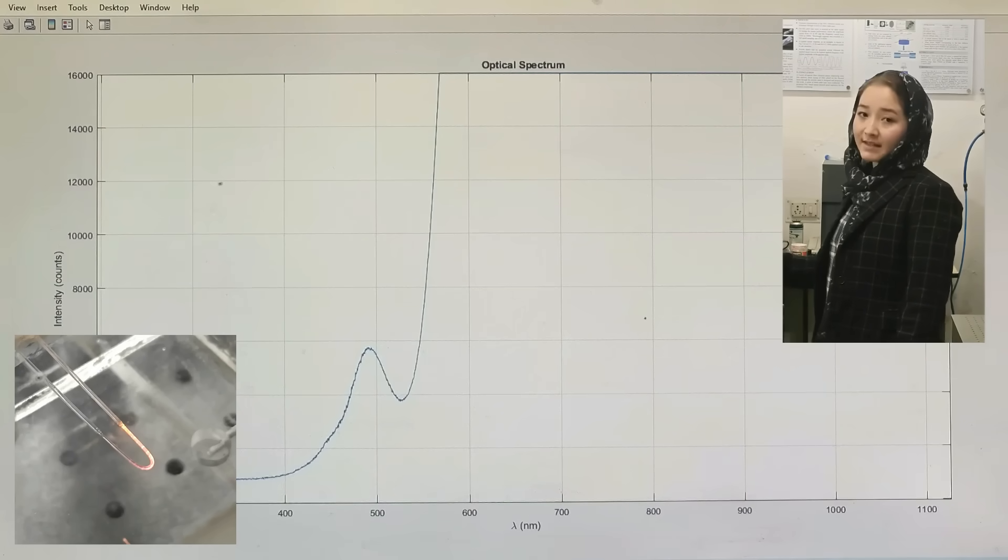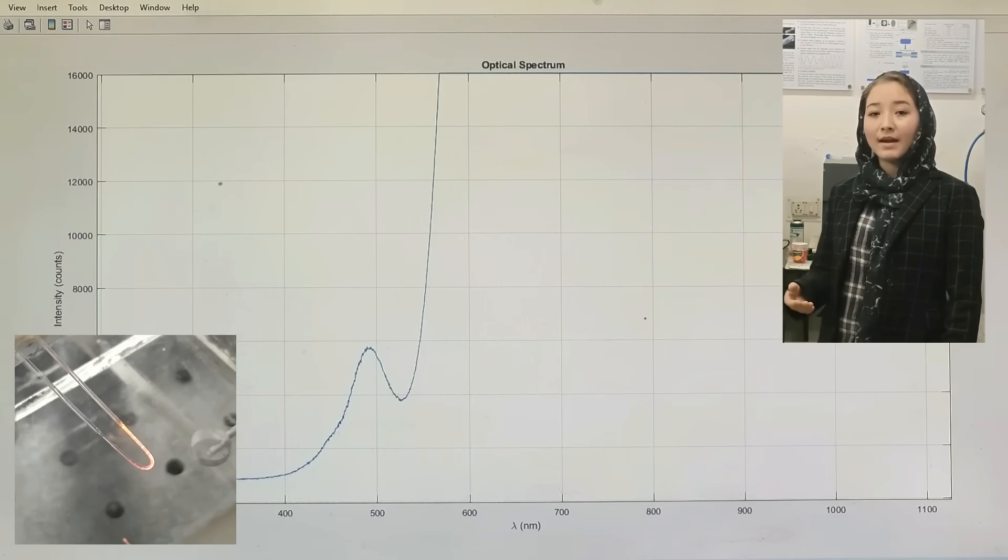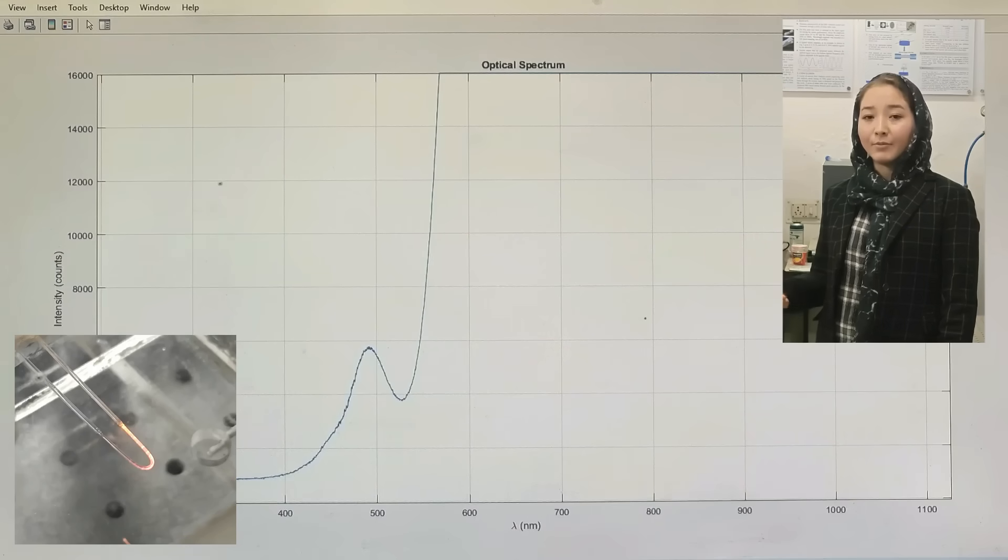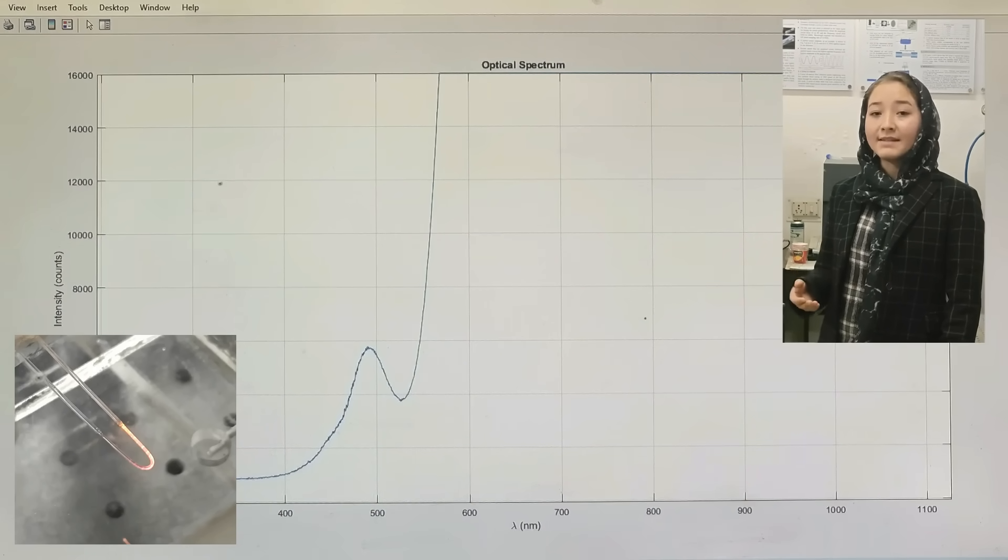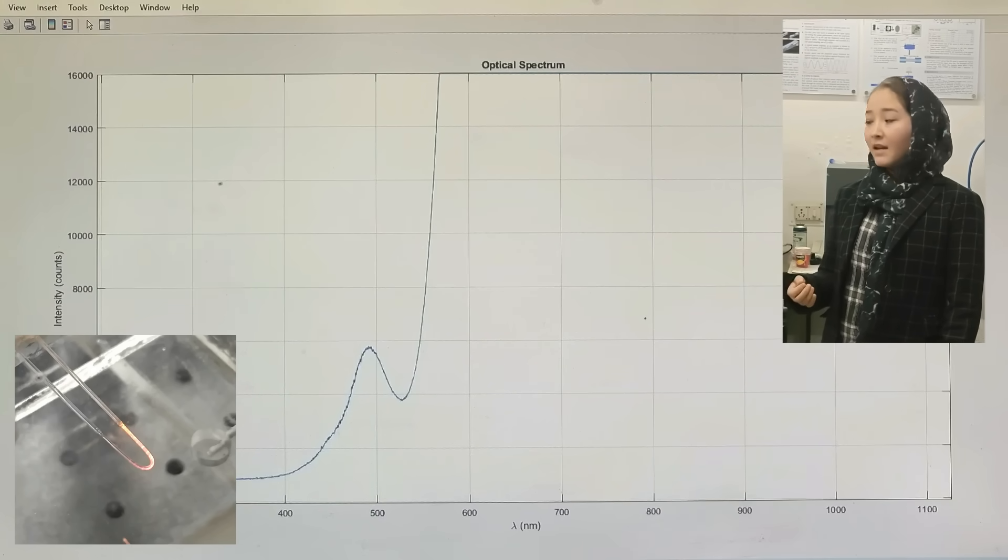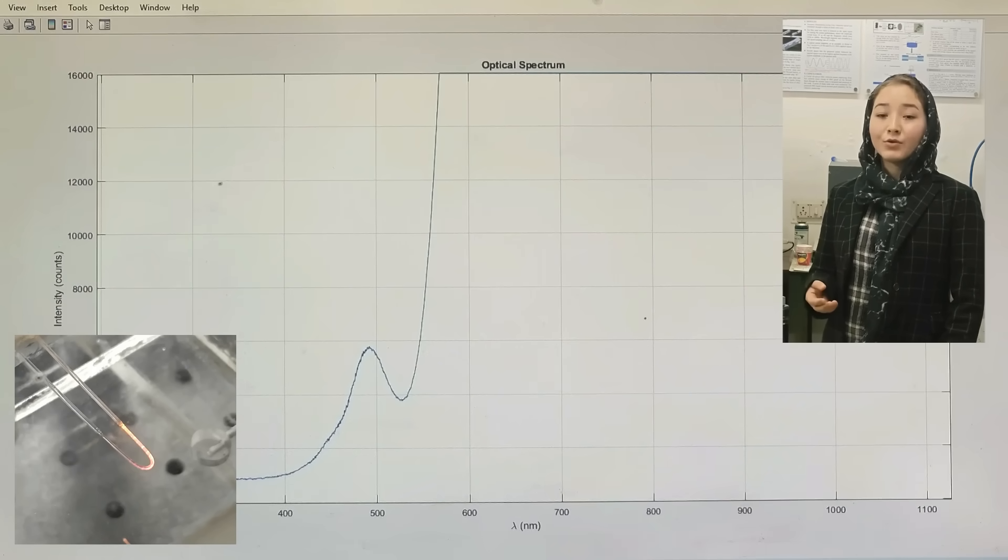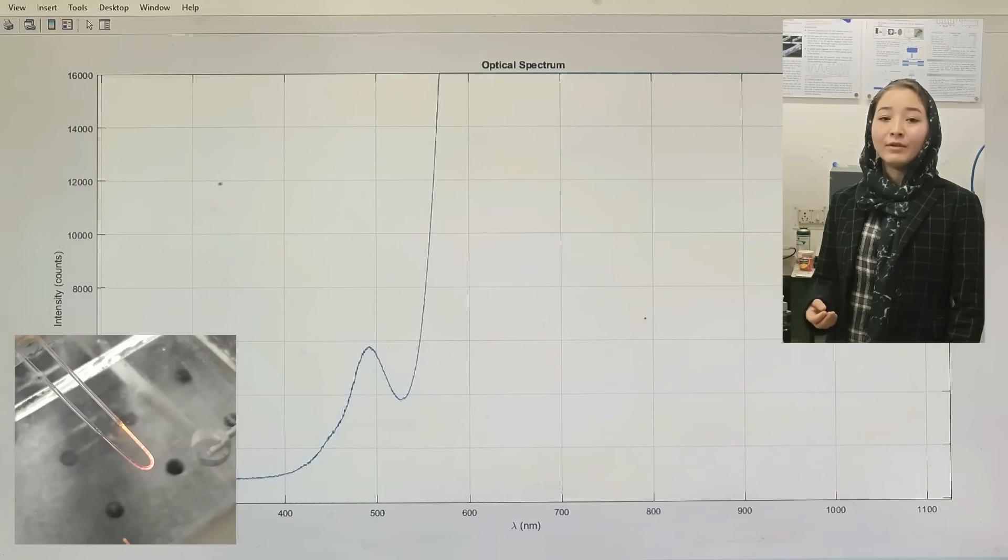By using this sensor, we can determine arsenic ion concentration as low as 0.09 part per billion. The World Health Organization has set a maximum permissible limit of 10 part per billion in drinking water. Compared to that, our sensor shows a significantly lower limit of detection.